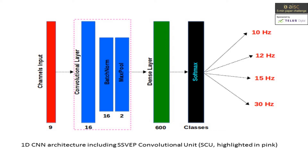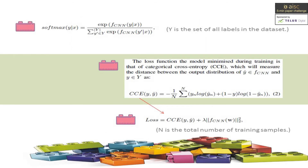In the convolution layer, the input is convolved via kernels to obtain feature maps. This process removes the requirement for feature extraction and signal preprocessing steps, and raw data samples can be used as a direct input to the model. Here you can also see the softmax and loss functions used for the experiment.